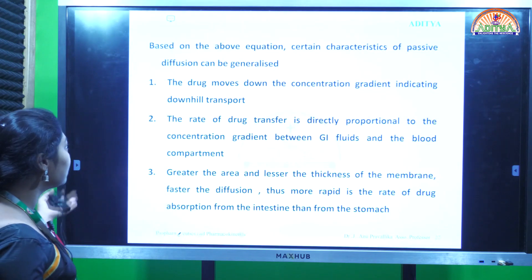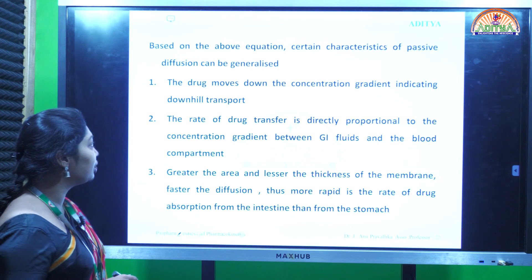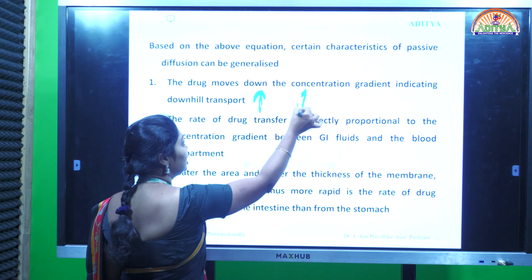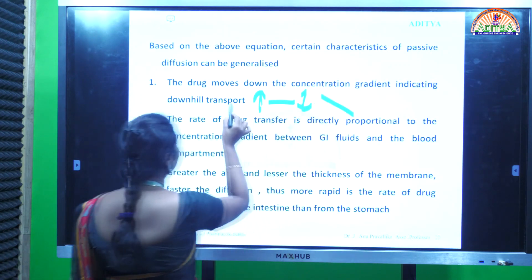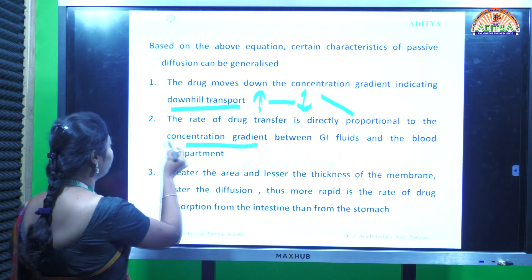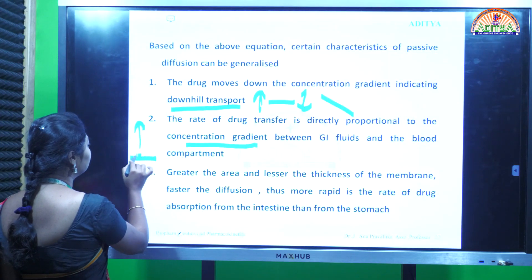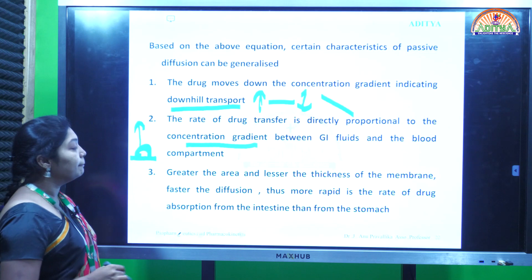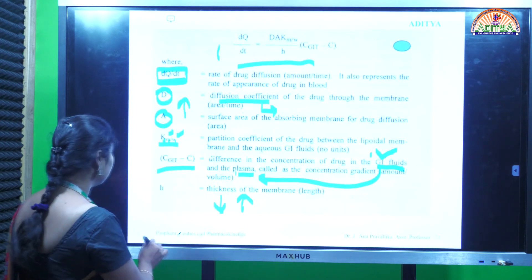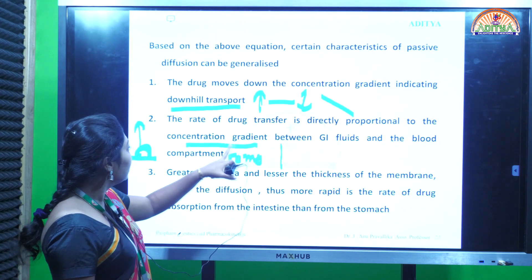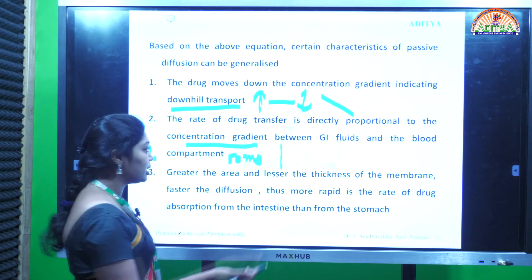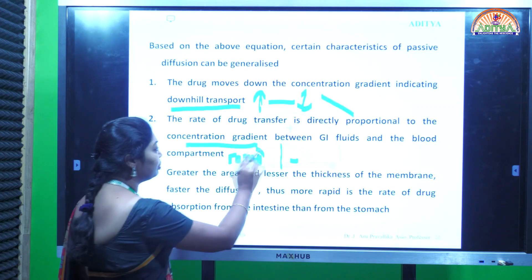Based on the above equation, passive diffusion can be generalized with the following points. First, the drug moves down the concentration gradient - indicating downhill transport - from the region of higher concentration to the region of lower concentration. Second, the rate of drug transfer is directly proportional to the concentration gradient. For example, if 50 mg of drug is taken, 25 mg crosses the biological membrane until equilibrium is attained; the other 25 mg will not cross until equilibrium is broken.